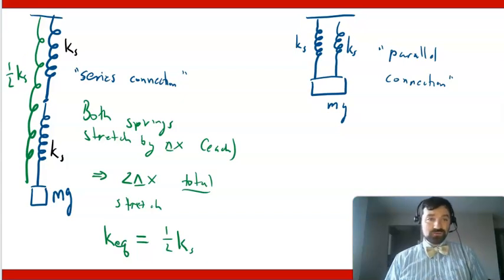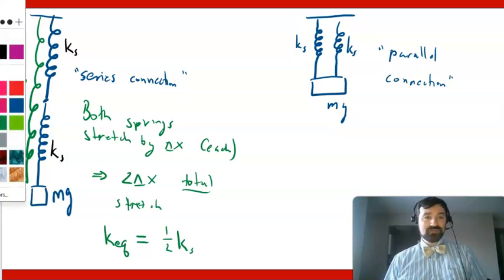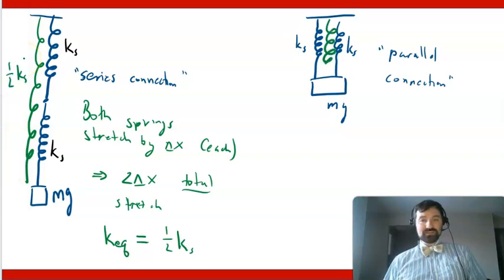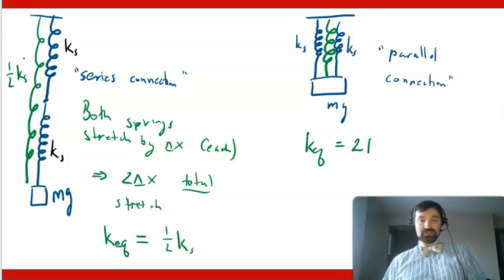But the total force held up is still a full mg. So if I were to replace these with an equivalent spring, it has half as much stretch for the same amount of weight. And so that's like having half the run for the same rise. That's like having two times as much slope.